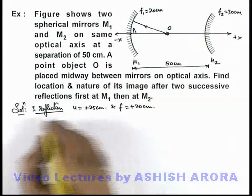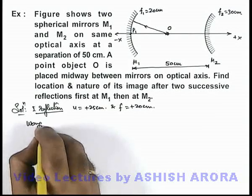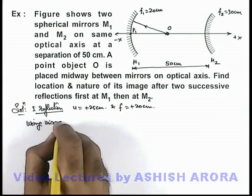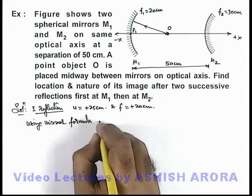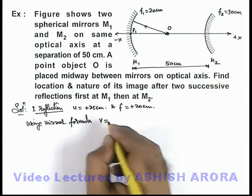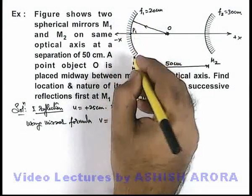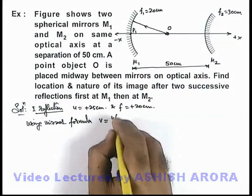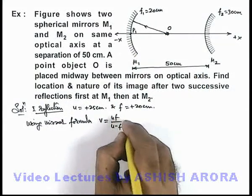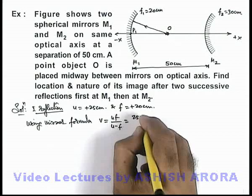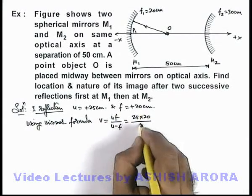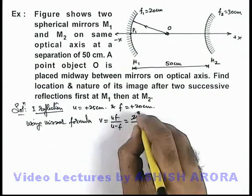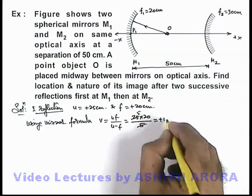So in this situation using mirror formula, you can directly find out the image produced by mirror M1 for the object, which is uf by u minus f. That will be 25 into 20 divided by 25 minus 20 is 5, and on solving this will be plus hundred centimeters.